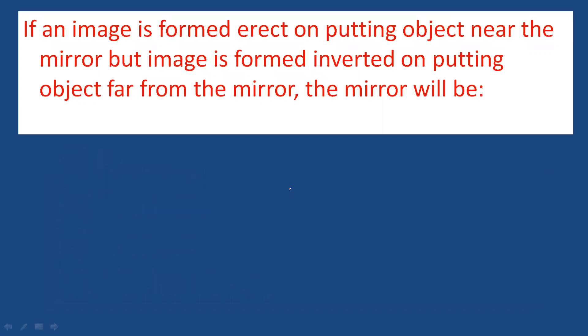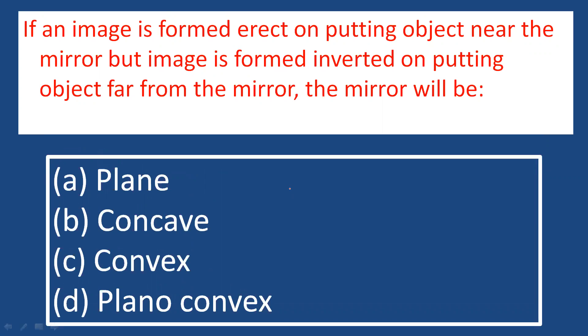If an image is formed erect on putting an object near the mirror, but the image is formed inverted on putting the object far from the mirror, what type of mirror is it?